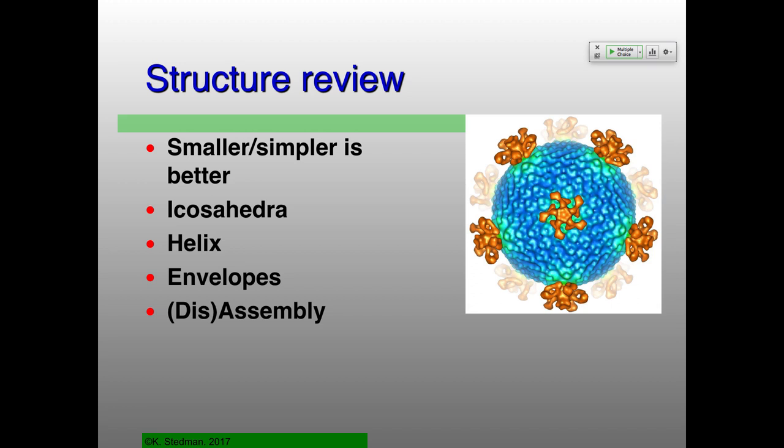For helical symmetry, the pitch is not completely equivalent to a T number. A T number tells you everything about the structure of an icosahedrally symmetric virion, whereas the pitch just tells you about one turn of the helix. You also need to know the length to know the actual number of subunits.